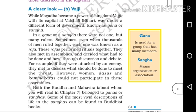These rulers performed rituals together. They also met in assemblies and decided what had to be done through discussion and debate. If they were attacked by an enemy, they met to discuss what should be done. However, women, dasas, and kamakaras could not participate in these assemblies.